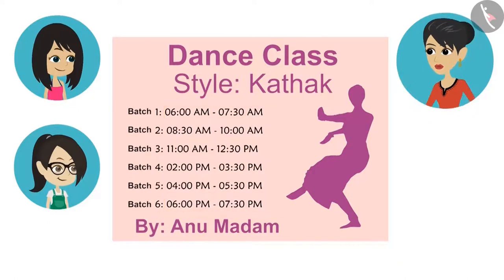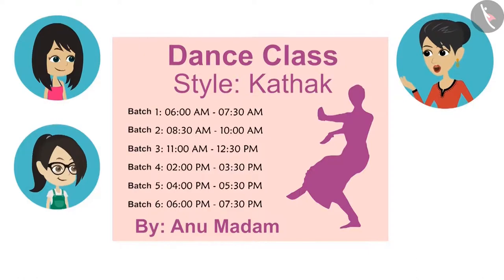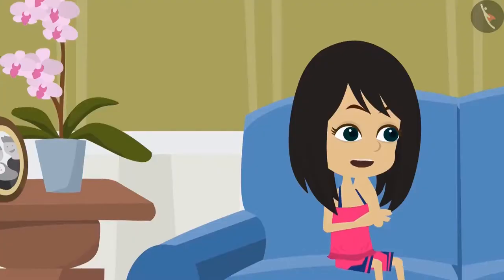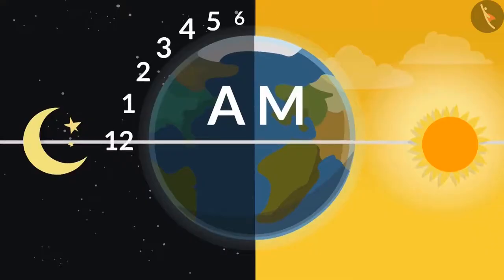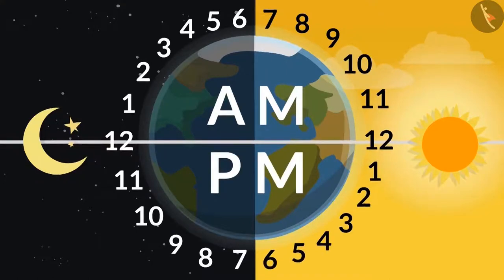No, these two are different timings. Batch 1 is in the morning and batch 6 is in the evening. How do you know, Mommy? Because they have written it. Look in front of batch 1 — the time is written as AM. Whereas PM is written in front of batch 6. AM is from 12 o'clock at night to 12 o'clock noon, so AM is written to show the time before noon. And PM is from 12 o'clock noon to 12 o'clock at night, so PM is written to show the time after noon.